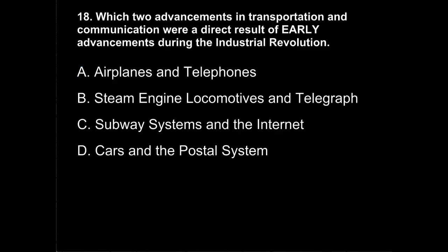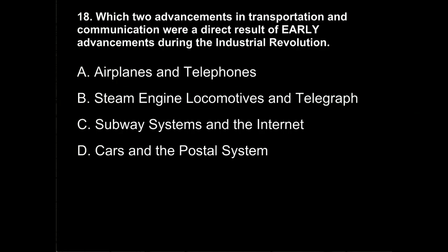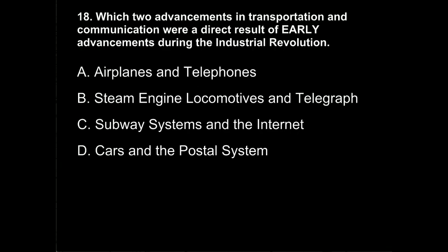Question 18. Which two advancements in transportation and communication were a direct result of early advancements during the Industrial Revolution? Was it A, airplanes and telephones? B, steam engine locomotives and telegraph? C, subway systems and the internet? Or D, cars and the postal system?